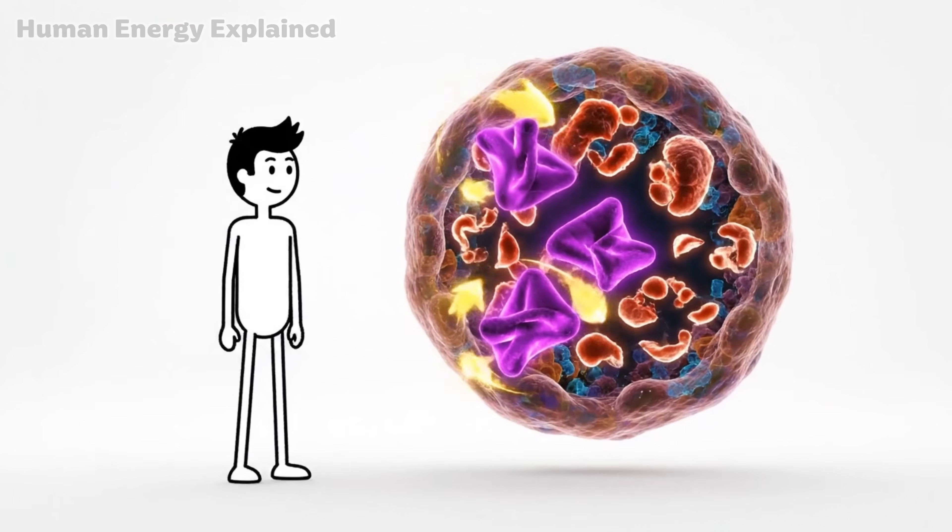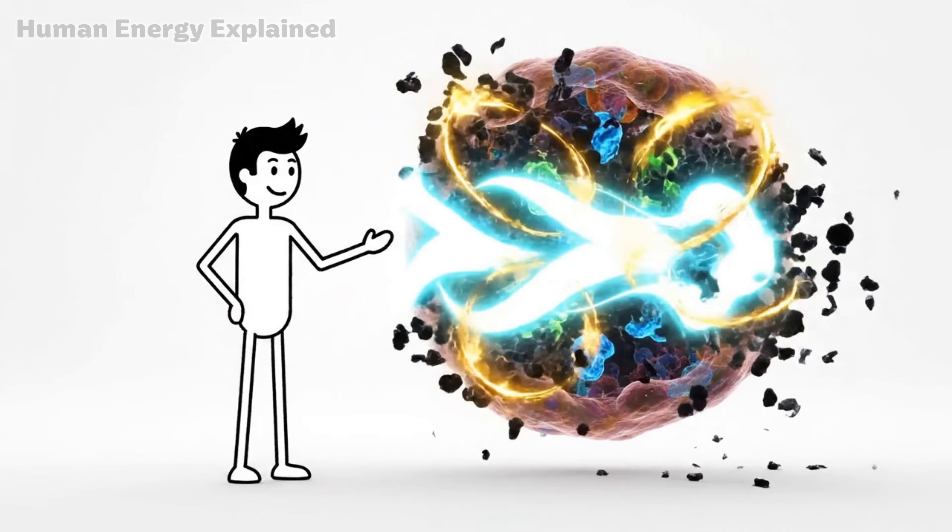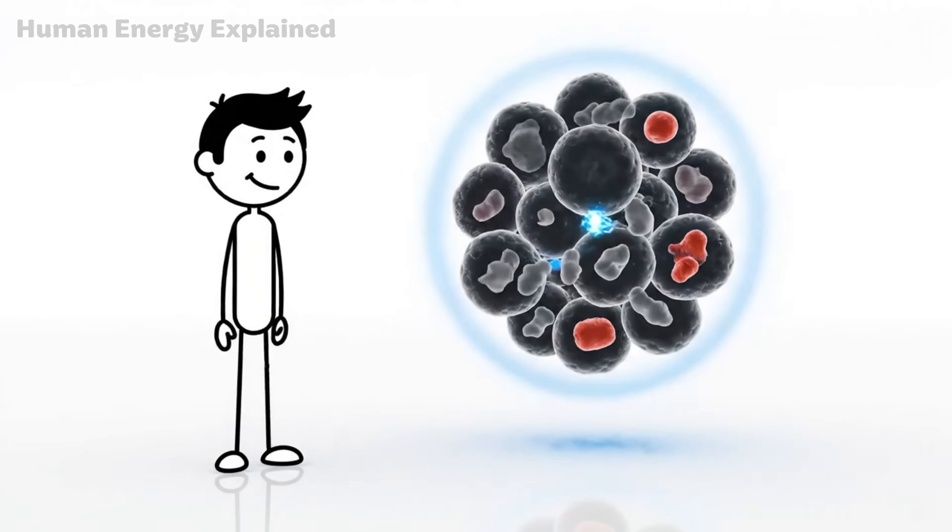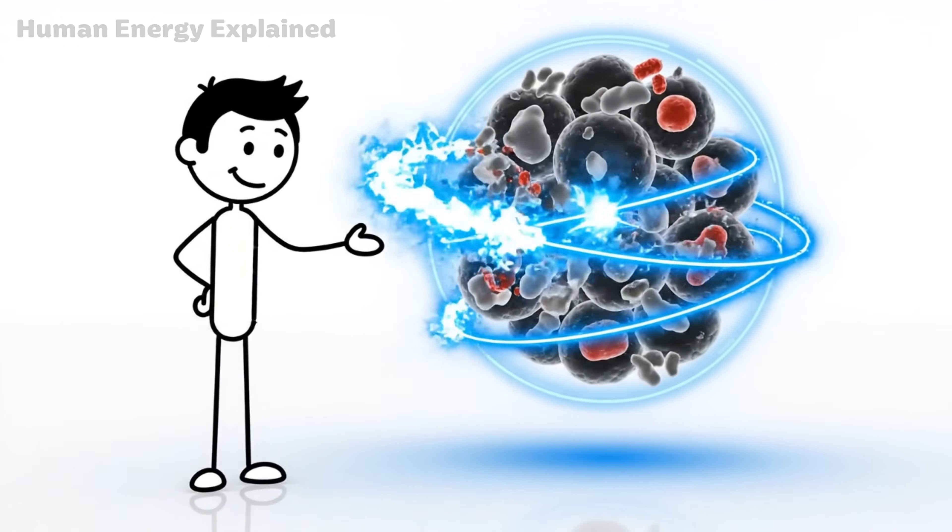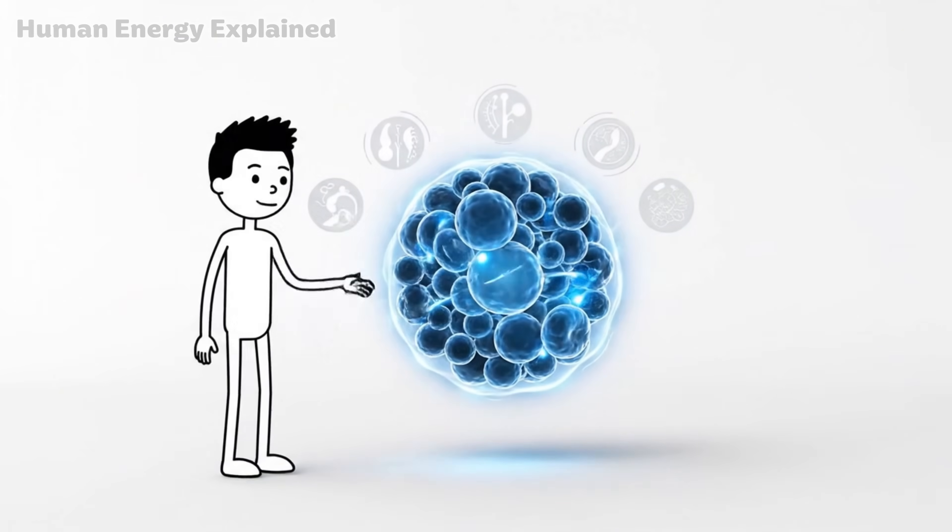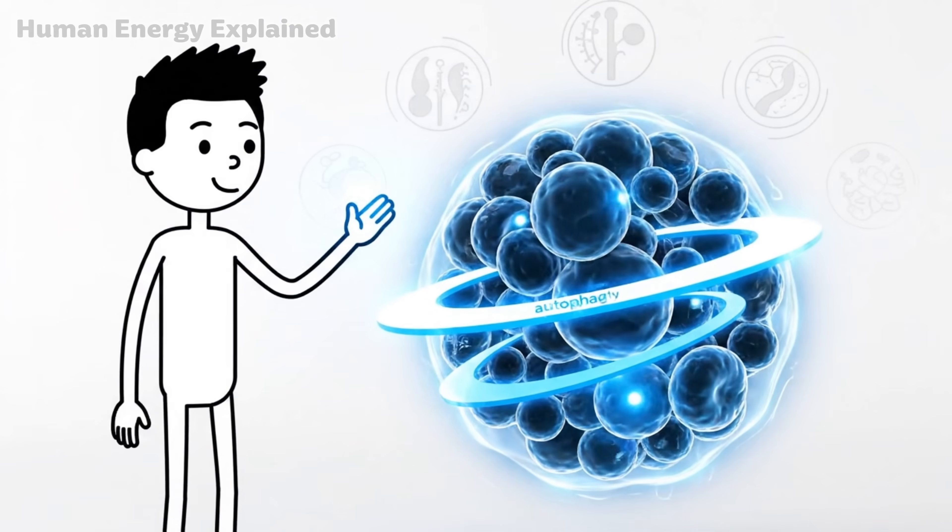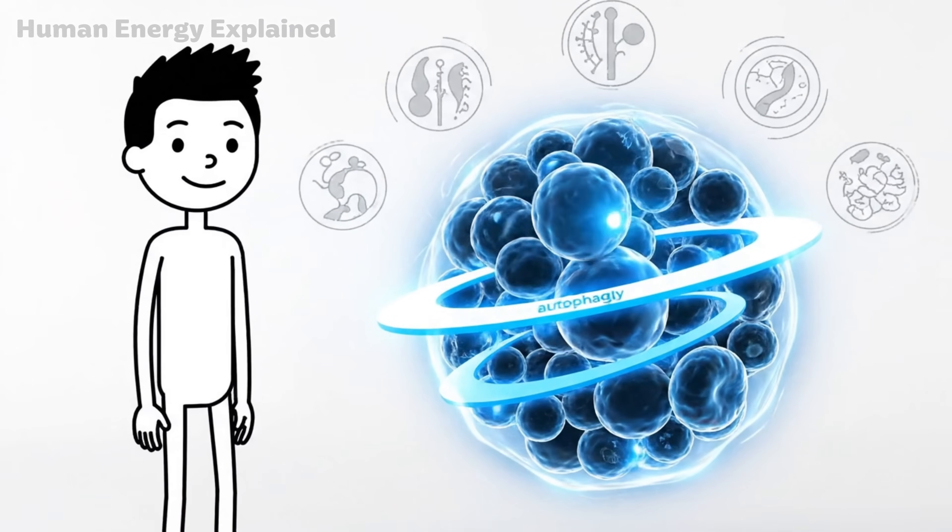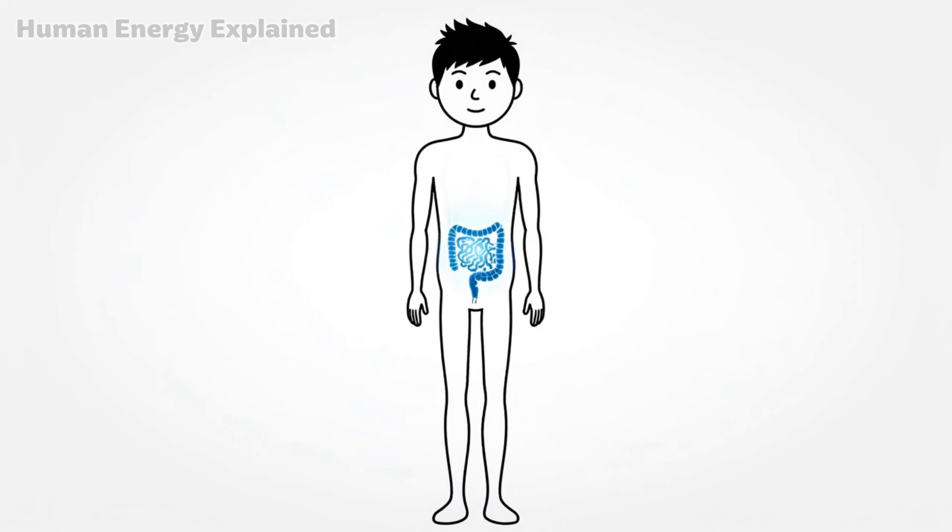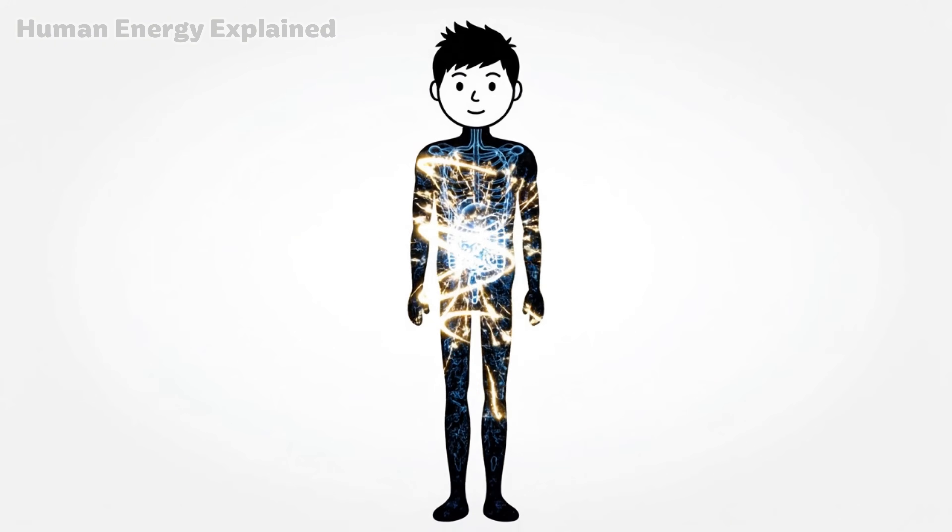Damaged proteins get broken down. Misfolded structures get recycled. Cellular waste that's been accumulating gets cleared out. Your cells don't just survive during fasting, they clean house. This process is linked to reduced risk of cancer, Alzheimer's, type 2 diabetes, and accelerated aging. When your body isn't constantly busy digesting food, it redirects energy toward maintenance and repair.